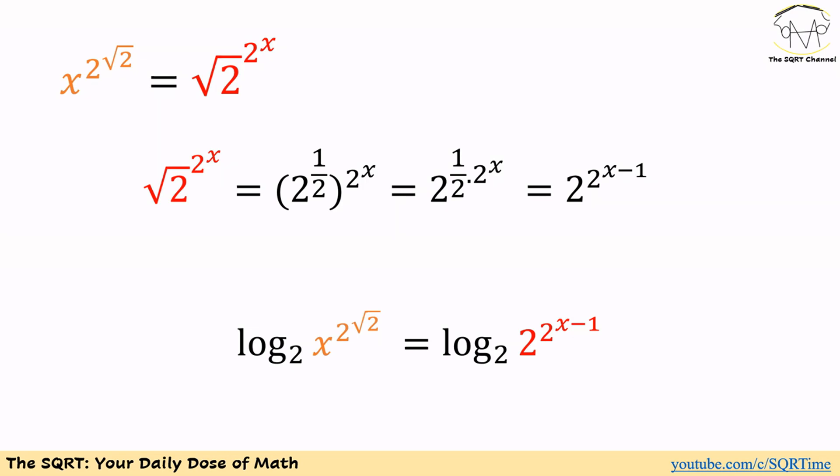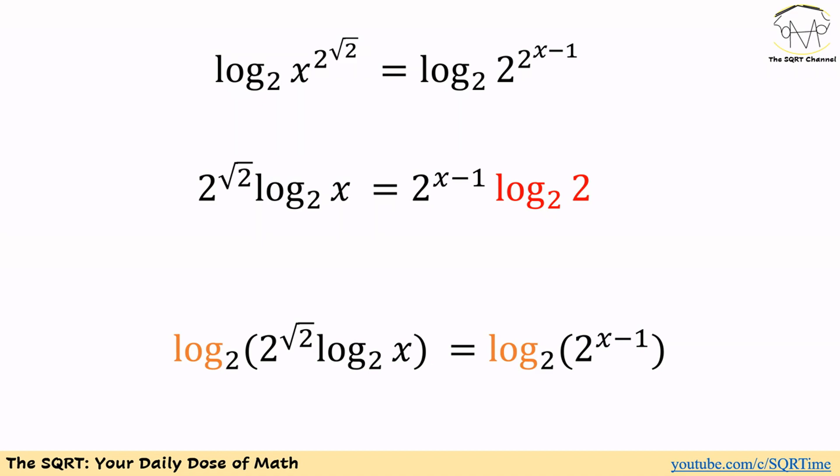Now we apply log base 2 to both sides. We take out the exponents: on the left we get 2 to the power of square root of 2 times log base 2 of x, and on the right we get 2 to the power of (x minus 1) times log base 2 of 2. Since log base 2 of 2 equals 1, we can remove it. Then we apply one more log to both sides.